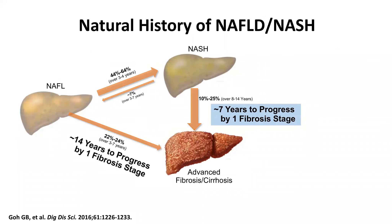In terms of natural history, patients with NASH progress through fibrosis stages faster than patients with simple fatty liver. With NASH, every seven years or so you progress by one fibrosis stage. So if you're 30 years old with stage one fibrosis, on average it takes 21 years to progress to cirrhosis. With simple fatty liver alone, it takes about 14 years to progress by one fibrosis stage — definitely longer to reach cirrhosis. That's why we consider NASH the aggressive form of fatty liver disease.